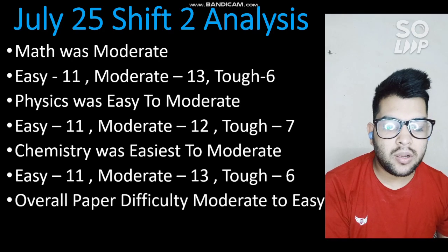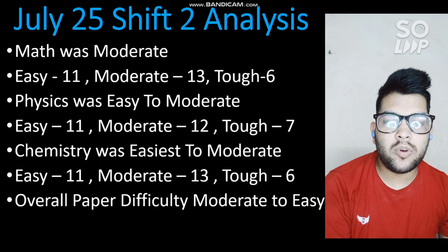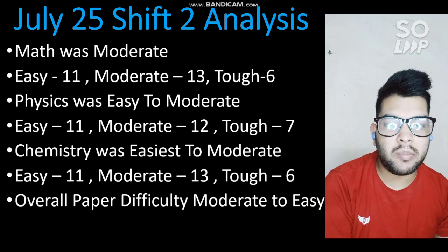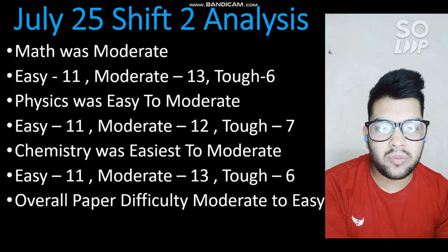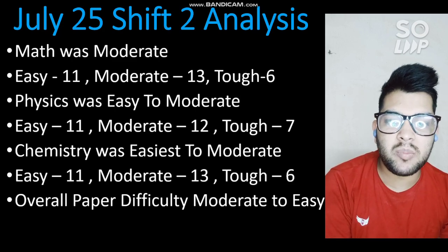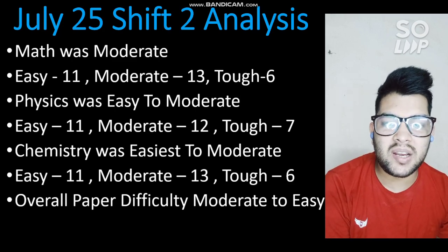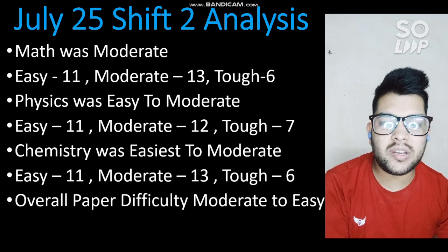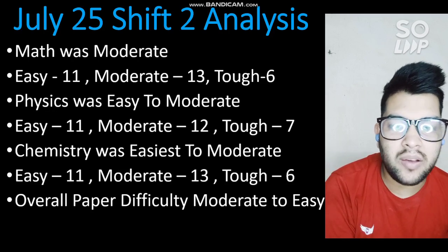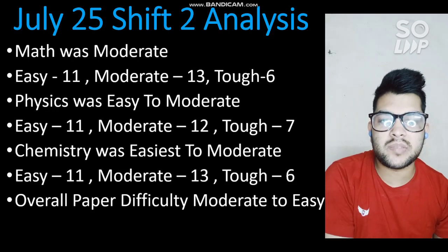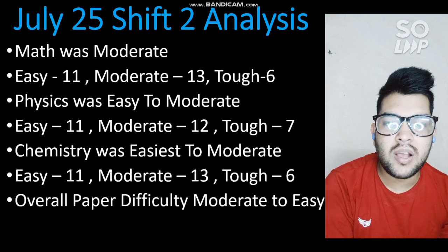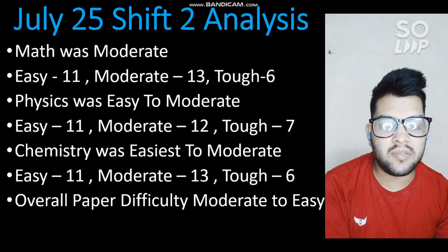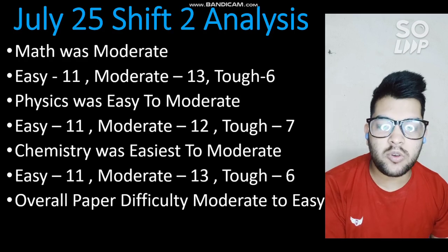Overall, the paper difficulty level was moderate to easy — this is the first time among all shifts of this July attempt that the paper has been rated moderate to easy. This will have an effect on the expected cutoff for JEE Advanced and on the marks versus percentile data, which I will discuss later in this video.